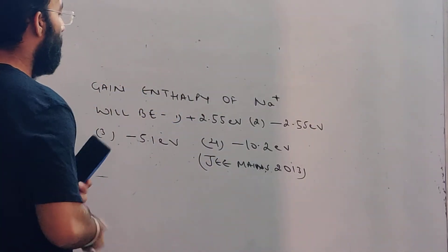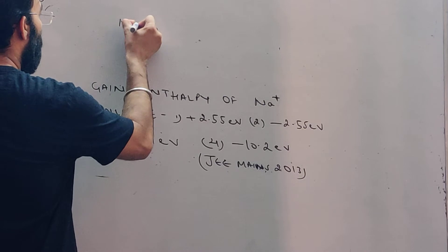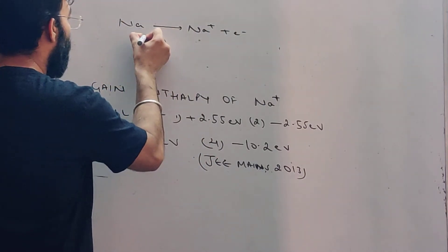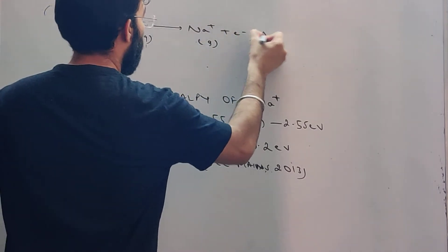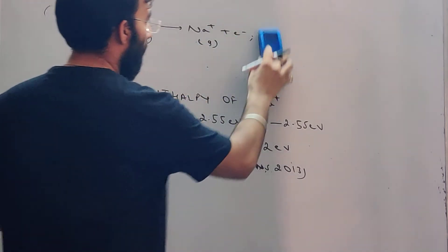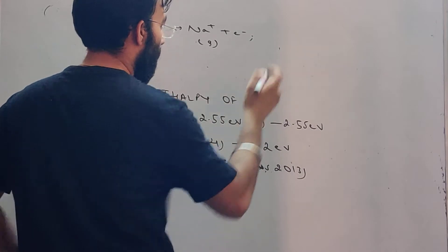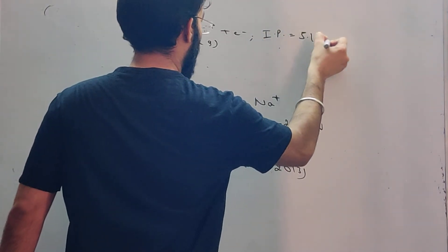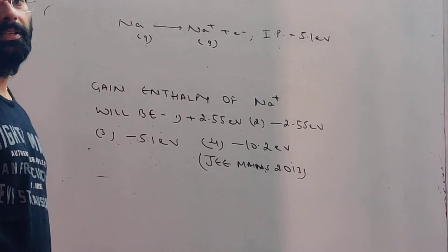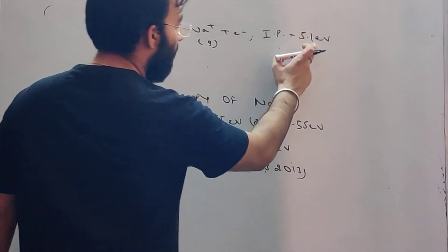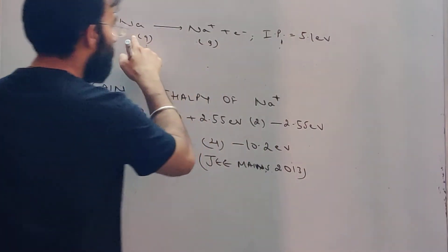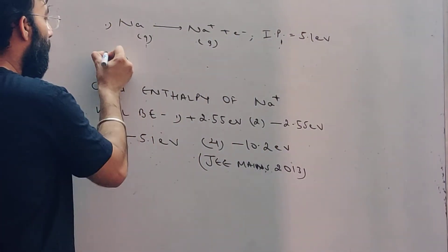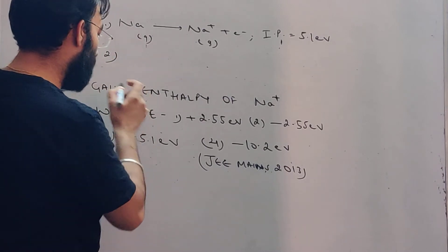The ionization potential of sodium means 5.1 electron volts of energy is required. It is the energy needed for ionization.